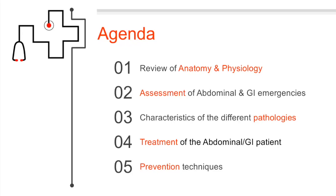This lecture will span over several different videos. In these videos I'm going to discuss a review of the anatomy and physiology of the GI system, which is important to understand what's going on with these patients. Assessment of abdominal and GI emergencies — we have to know how to assess these patients, come up with a differential diagnosis, a field diagnosis, and then perform treatments. Characteristics of the different pathologies to help with your differential, treatment of the abdominal GI patient, and prevention techniques.